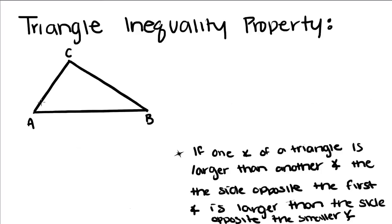So if you know that this angle, angle A, is greater than angle B, then the side opposite angle A, which is CB, is going to be greater than the side opposite B, which is CA.